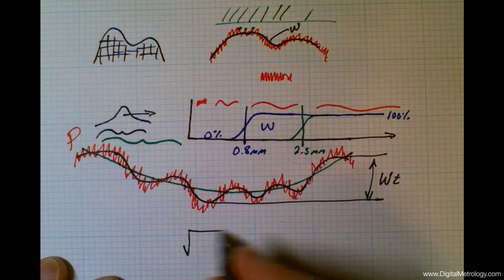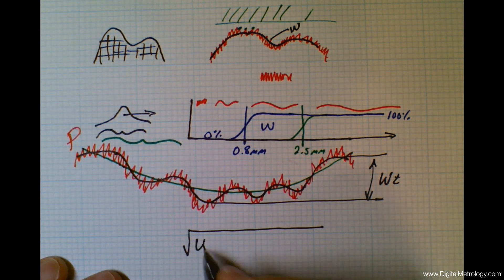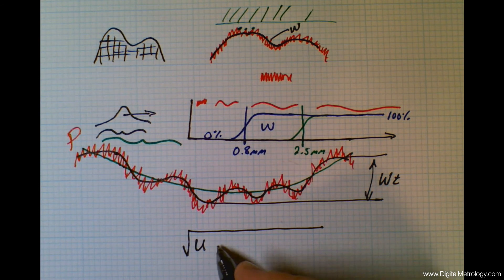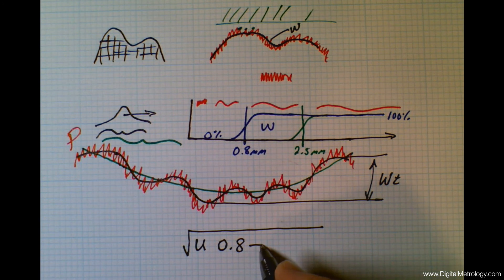And it might look like this on a drawing. We might use the ISO 1302 convention and say, here comes an upper limit. And we're going to look at wavelengths zero point eight millimeters and longer.